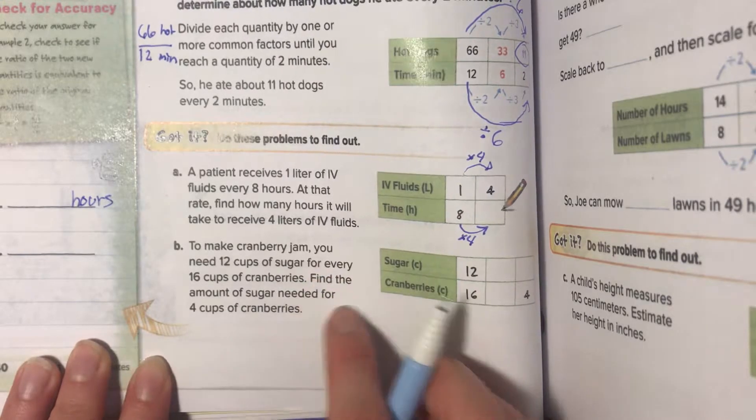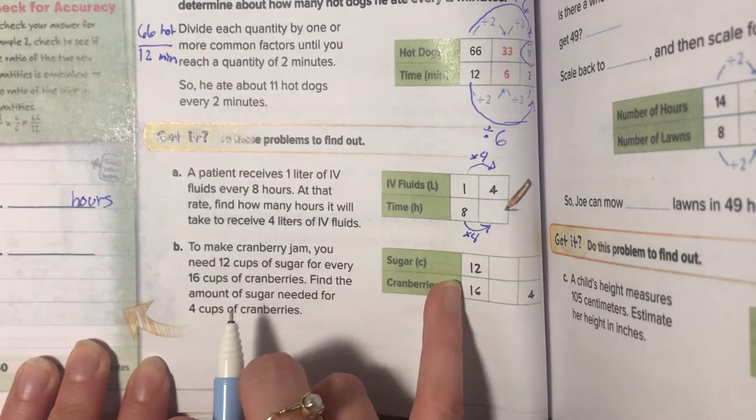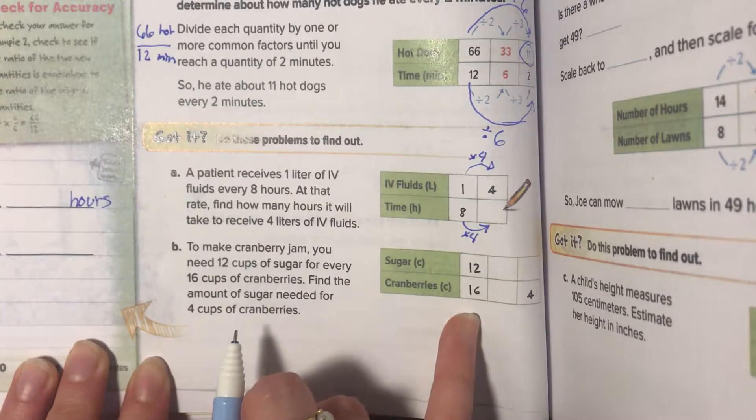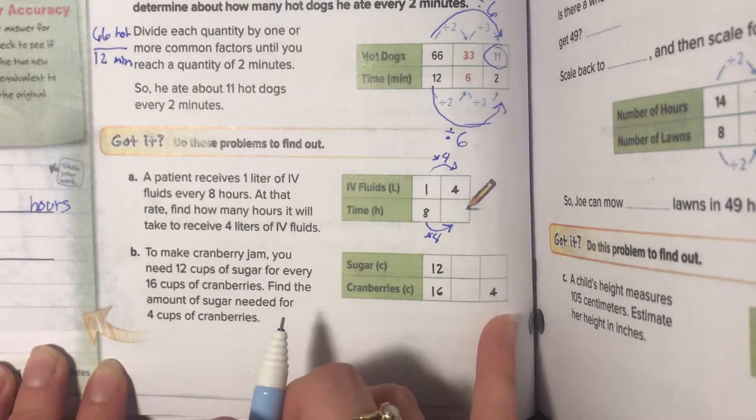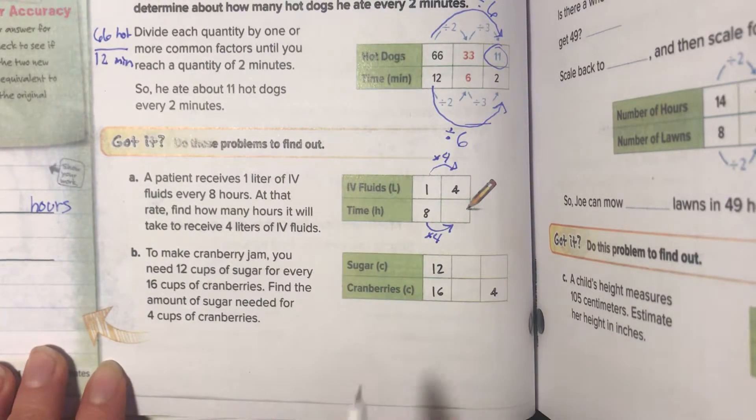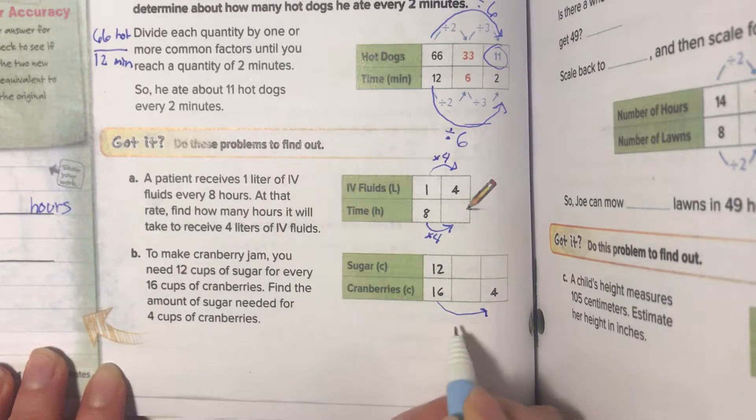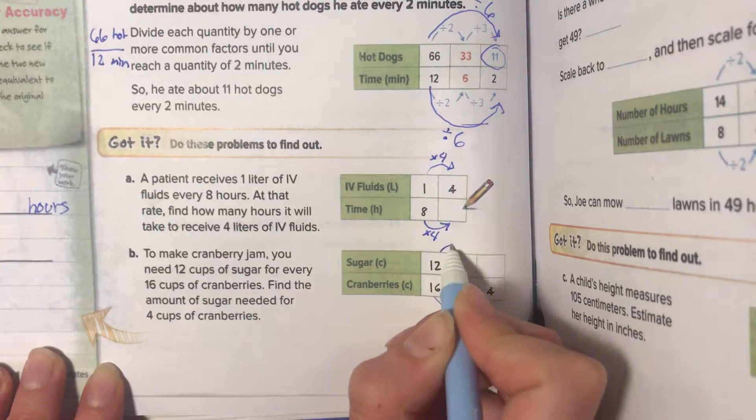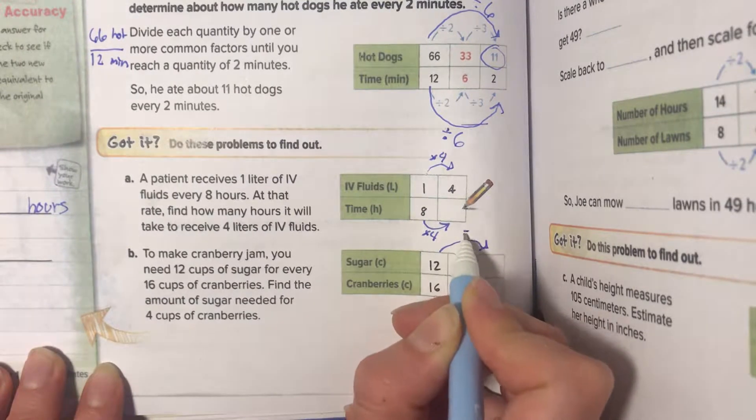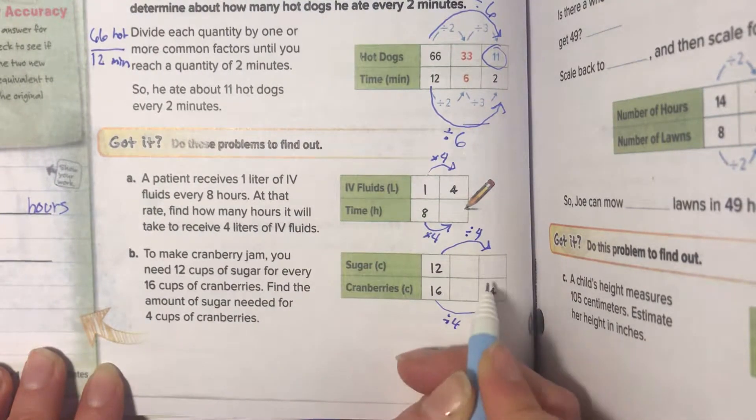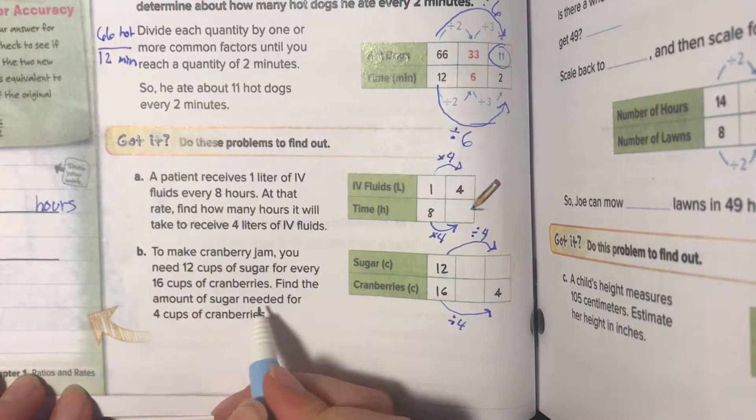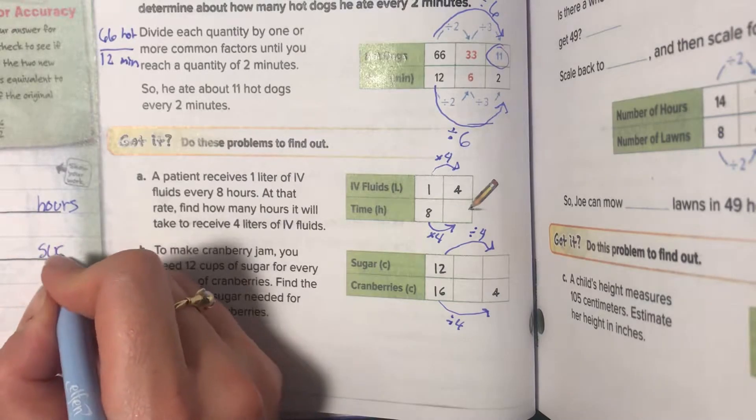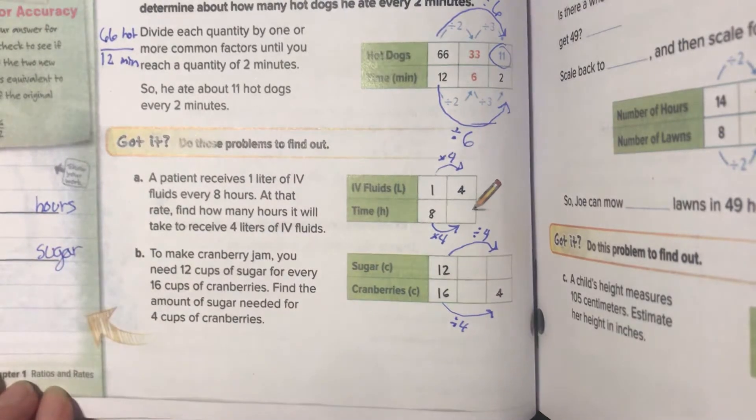To make cranberry jam, you need twelve cups of sugar for every sixteen cups of cranberries. Find the amount of sugar needed for four cups of cranberries. This time they're going down, so they're dividing by four. So over here you should be dividing by four to get an answer. Write it in here and write it here. Amount of sugar, so you need to write the units, sugar. So you have this in class, I'll check it.